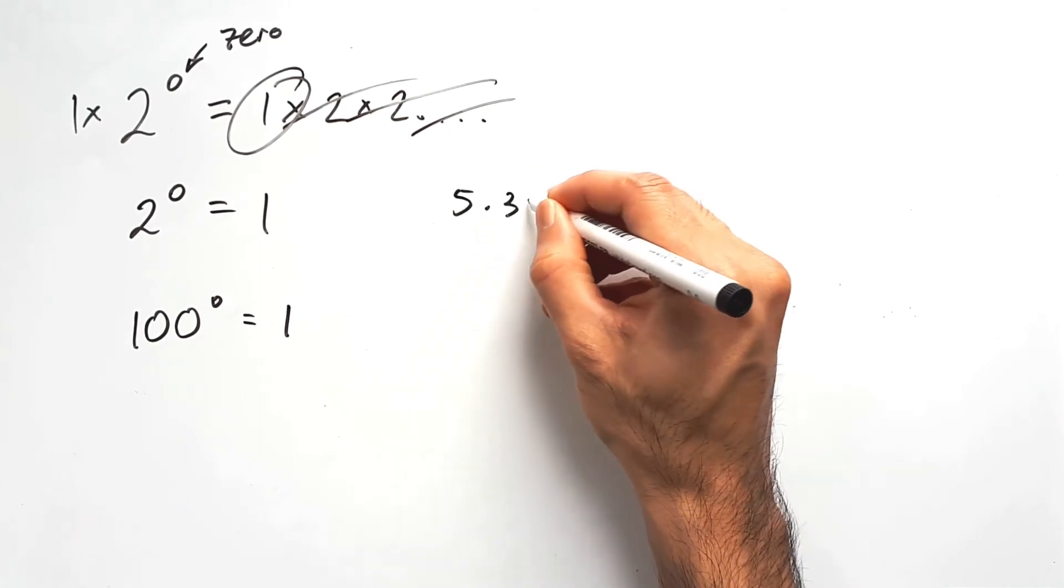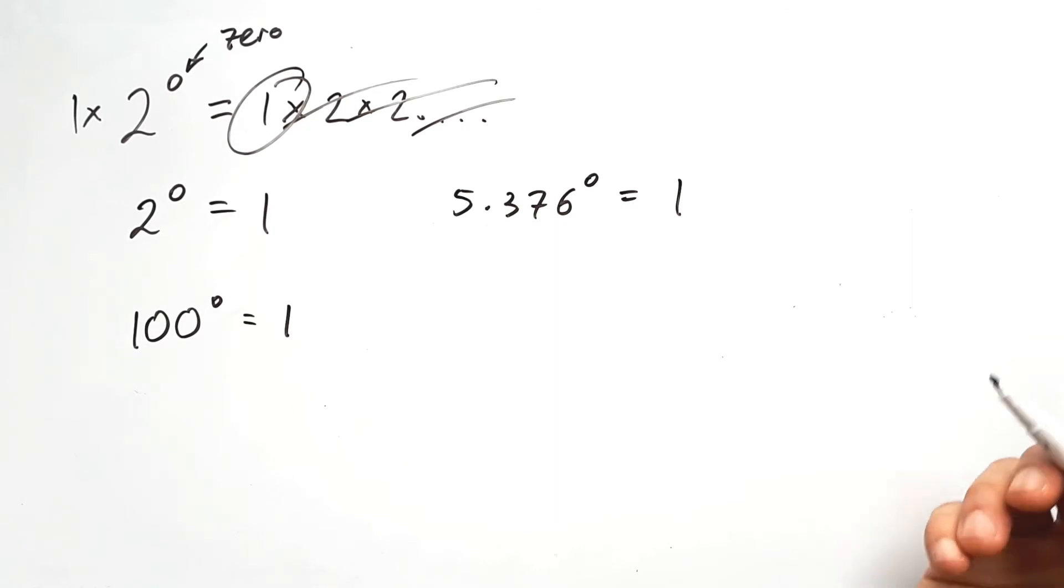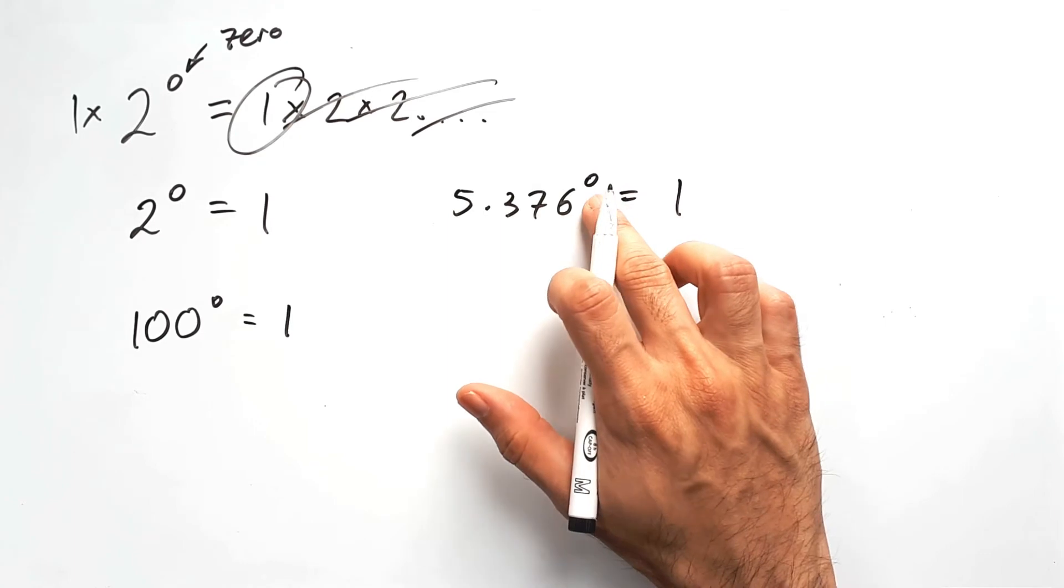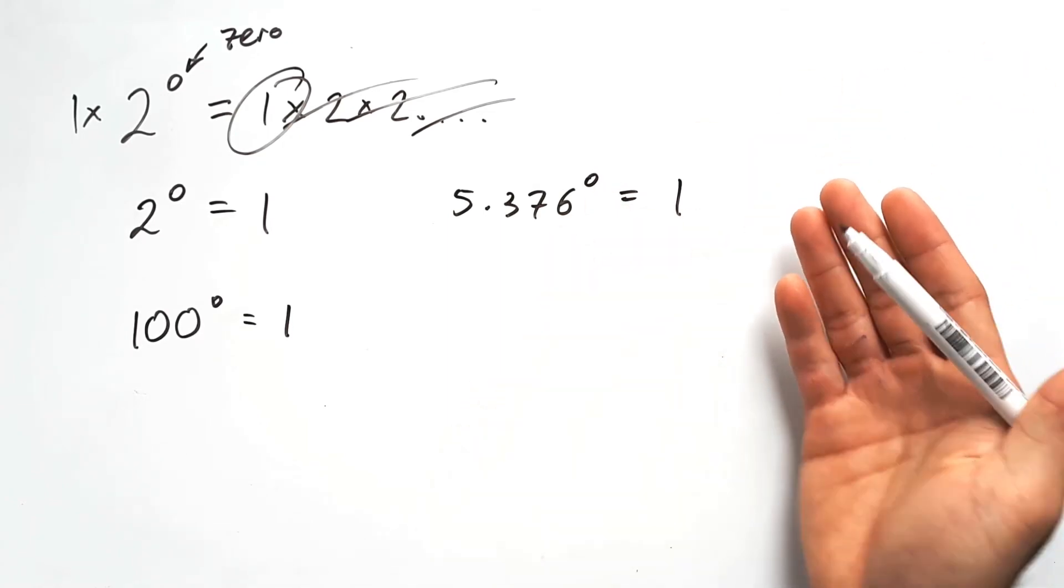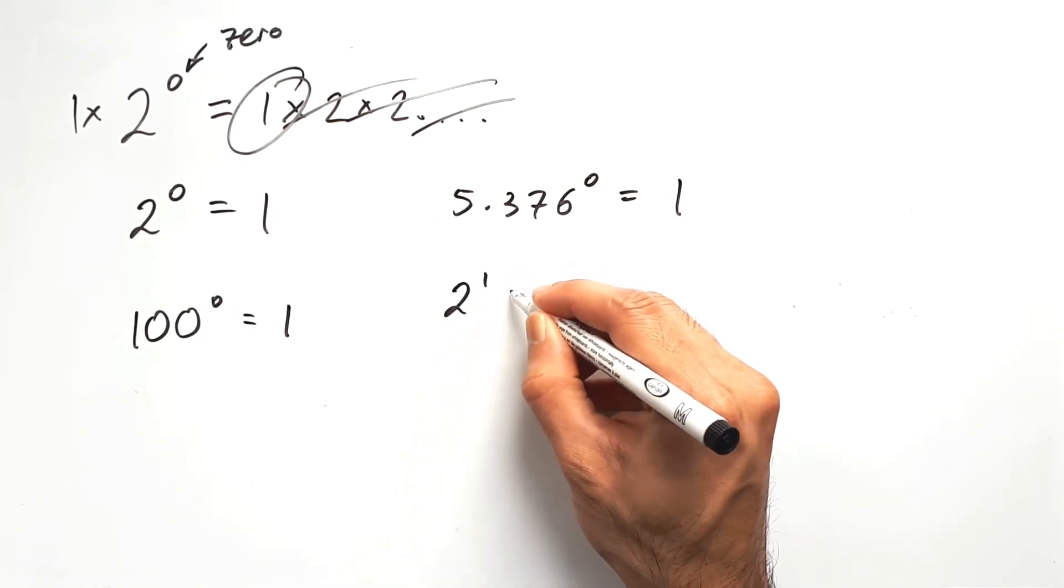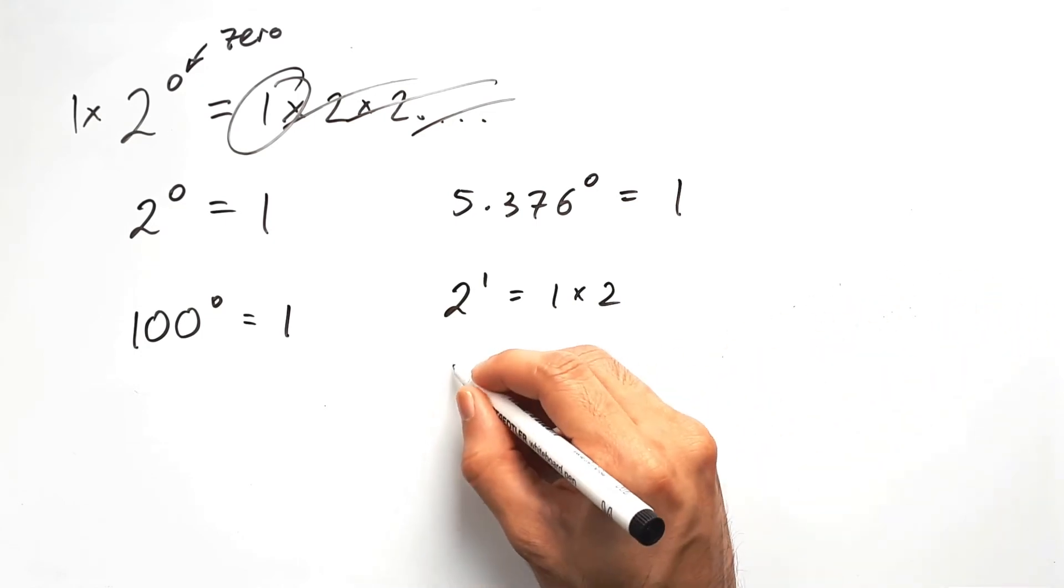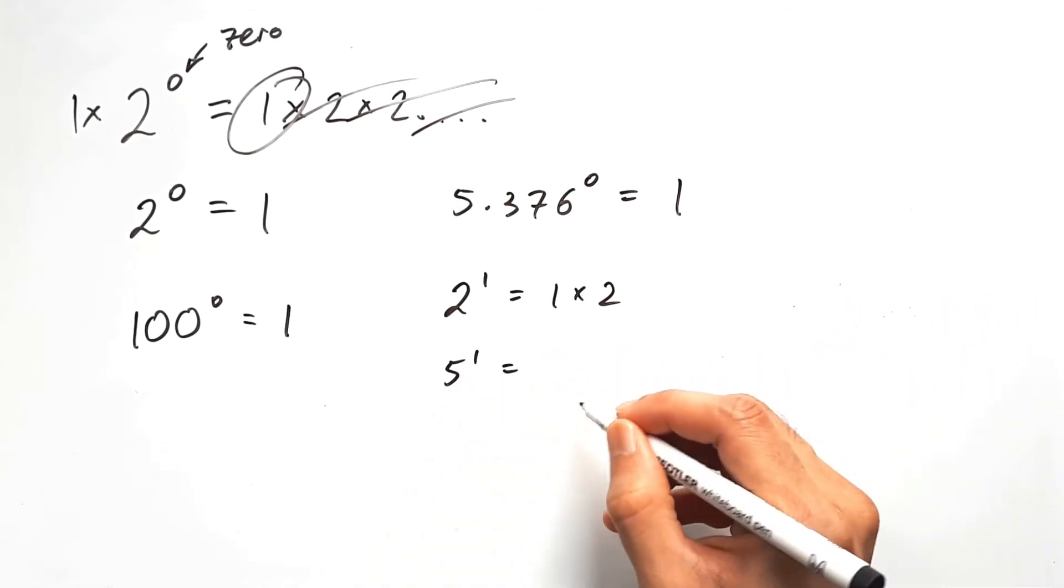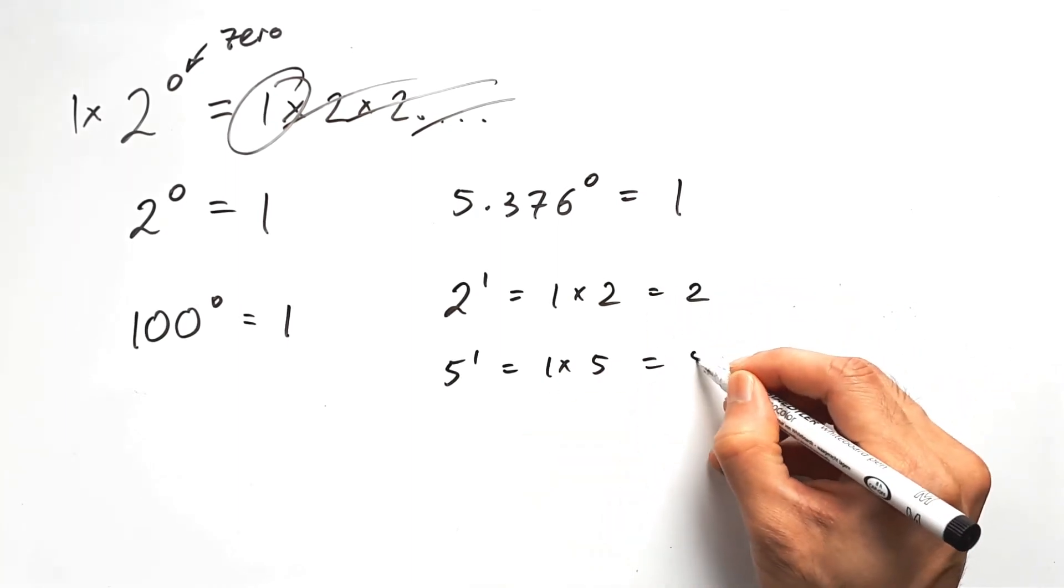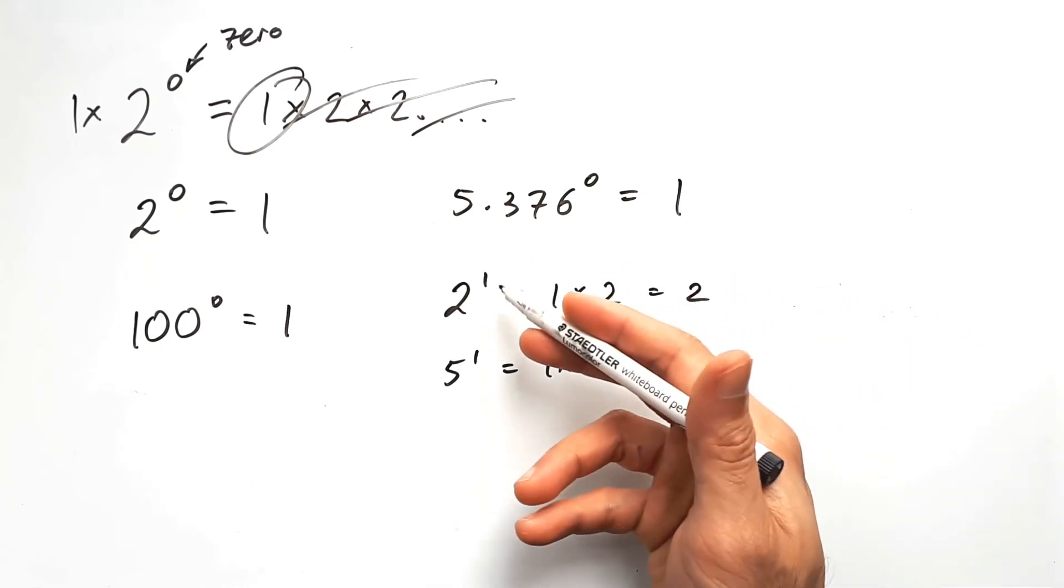100 to the power of 0 is the same as still just saying 1, because you're not multiplying any 100s. Or 5.376 all to the power of 0, that's still just 1, because you're not multiplying any number of factors for this. Because remember, the power represents a quantity of factors. You're not multiplying any of them here, so it's just 1. And just to address the obvious special case, 2 to the power of 1 will just be 1 times 2 once. Or 5 to the power of 1, that's the same thing. 1 times 5 only once. So these answers are the same as just not showing the 1 there. So 1s tend to be invisible, even as a power.